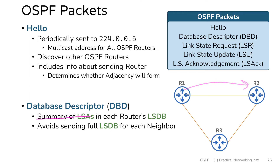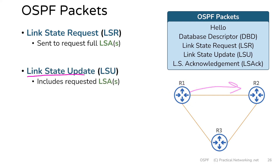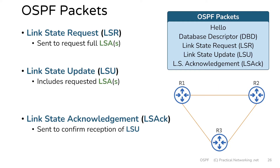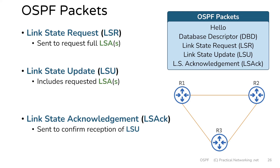When router 1 sends the summary of the LSAs, it is up to router 2 to determine which LSAs it actually needs. It's going to ask for specific LSAs using a link state request packet. Inside a link state request packet is a list of the LSAs that a particular router needs. This will prompt router 1 to respond by sending the LSAs in a link state update packet, or an LSU. Finally, router 2 will confirm reception of those packets by sending a link state acknowledgement. You can see there's an intrinsic reliability to the OSPF conversation.